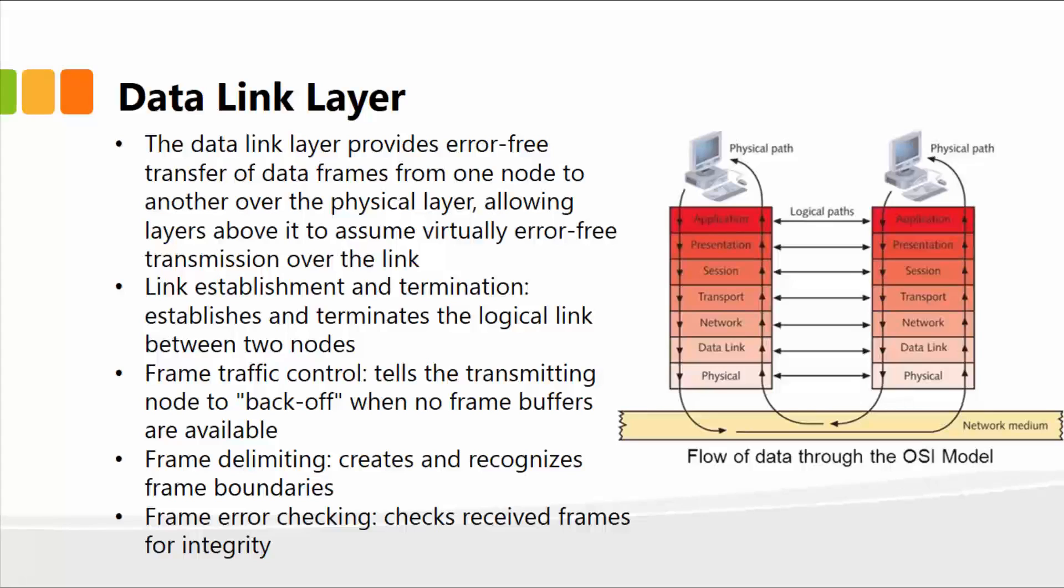So this particular layer checks to see for any errors within the data or the bits being received from the physical layer, allowing layers above it to assume a virtually error-free transmission over the link.